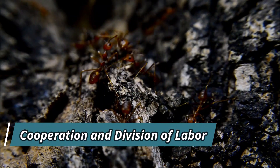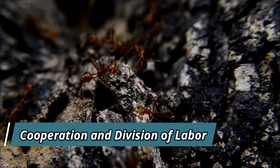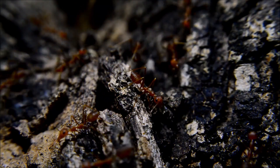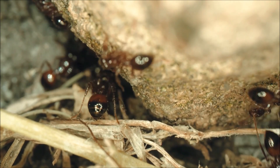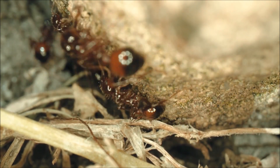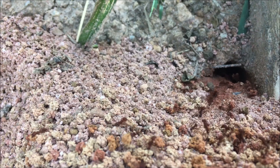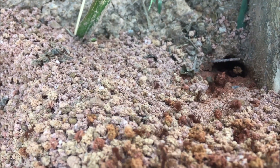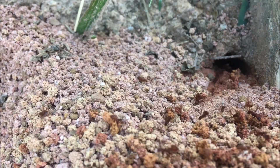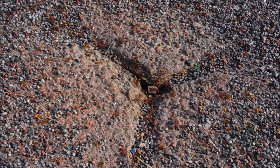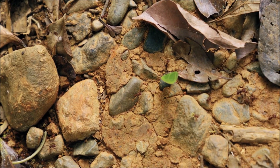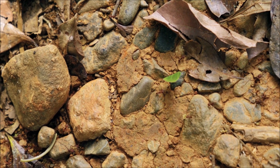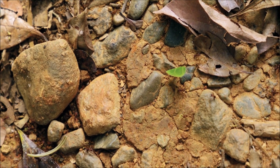One of the most remarkable aspects of ant colonies is the division of labor among the worker ants. Different workers specialize in specific tasks, such as foraging for food, nest construction, brood care, and defense. This specialization allows for a highly efficient allocation of resources and increases the overall productivity of the colony. The division of labor in ant colonies is not fixed, and individual ants can switch between tasks depending on the needs of the colony.